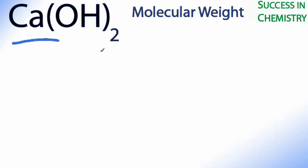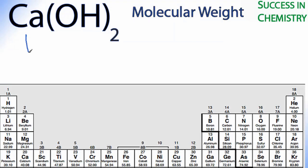So let's find the molecular weight for Ca(OH)₂. Looking on the periodic table, Ca is 40.08 grams per mole.